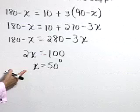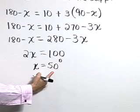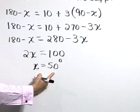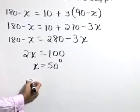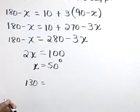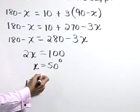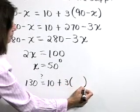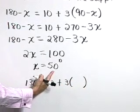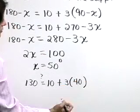Now we've solved the problem, but let's quickly check. If an angle's measure is 50 degrees, then its supplement is 180 minus 50 or 130 degrees. And is that supplement indeed equal to 10 degrees more than 3 times its complement? If an angle is 50 degrees, its complement is going to be 40 degrees.